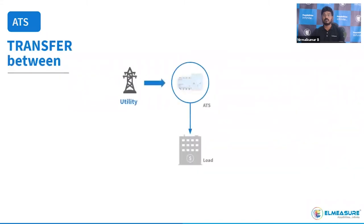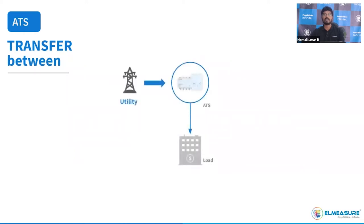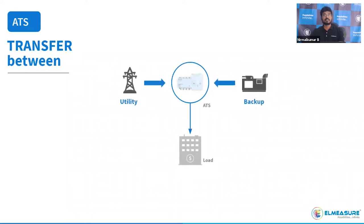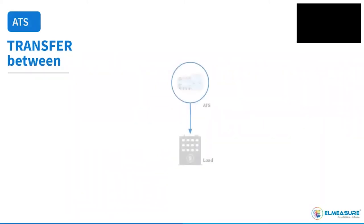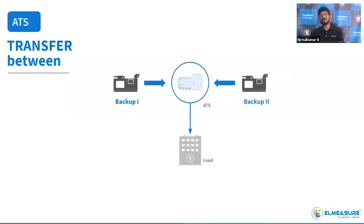Our product supports transfer between utility to utility and utility to backup generator. Utility-to-generator is the most common market requirement. For remote areas, industries, railways, and other critical applications, utility-to-utility and generator-to-generator transfers are also required. We can use our product for different network applications.